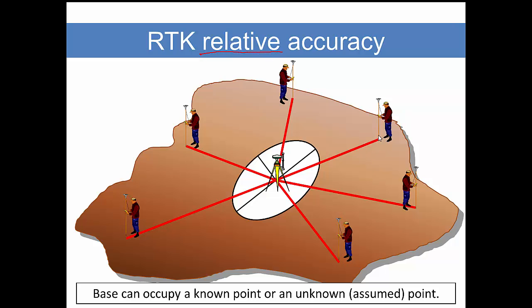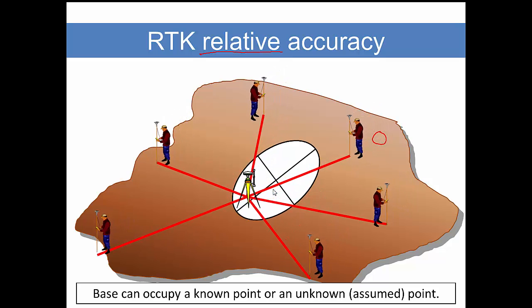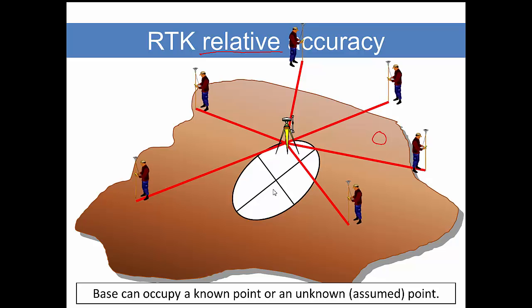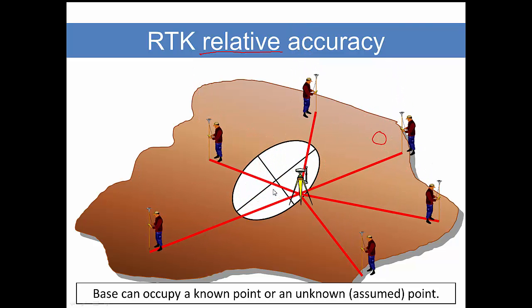The good news about RTK GNSS technology is the accuracy that we depend on is relative. That is, the accuracy of each point measured with the rover relative to the base is going to be very good, or we can say the error is small. So whether the base unit is here or here or here or here, the relative figure of all these points, that is relative to the base, is still pretty good and accurate.